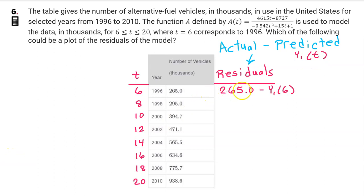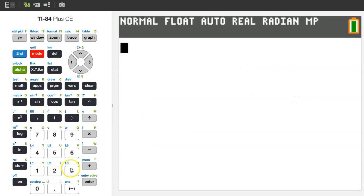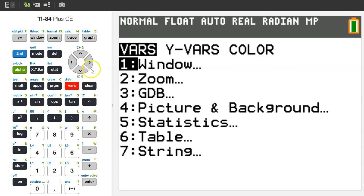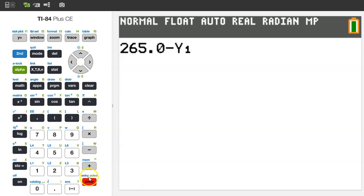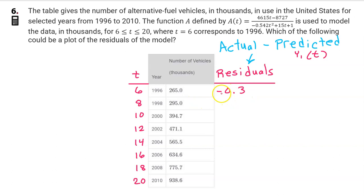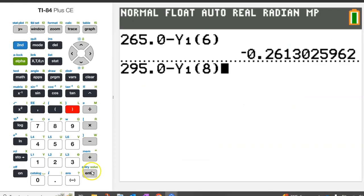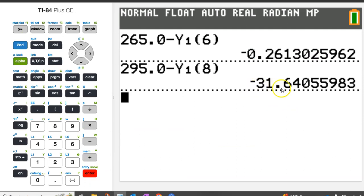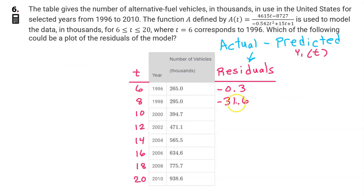For example, we will calculate this first residual by subtracting 265.0 minus Y1 at 6. I'm going to show all the steps just this once. So, we said 265.0 minus Y1. To get Y1, we hit vars, switch over to Yvars, hit enter, and enter again. And, we wanted Y1 at 6. So here's the first residual. I think one decimal will be enough for what we're doing, so negative 0.3. For the next residual, we will do 295.0 minus Y1 at 8. So, our next residual is negative 31.6. Let's see if these two residuals are enough to eliminate any of the answer choices. We can always calculate more residuals if we need to.